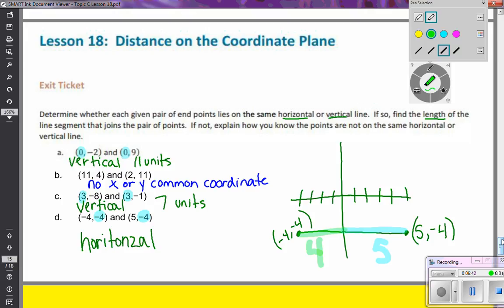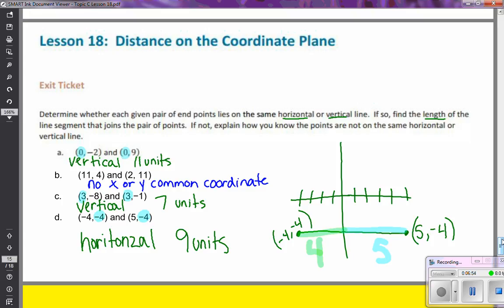So to get the total distance of the line, I have 4 plus 5, which means I have a total of 9 units for that line segment. So I hope these examples help you when you're doing some practice. And just remember, make a difference today.